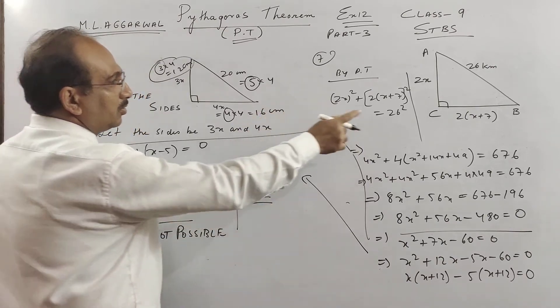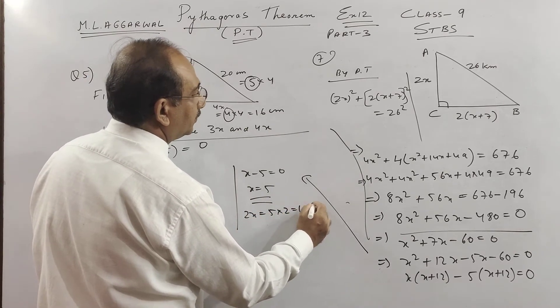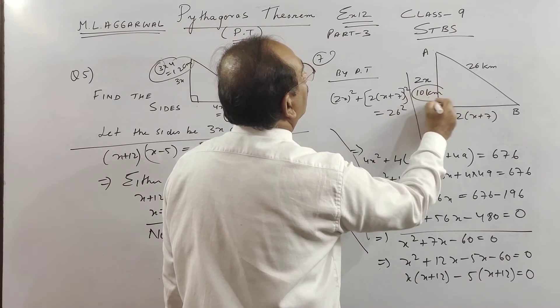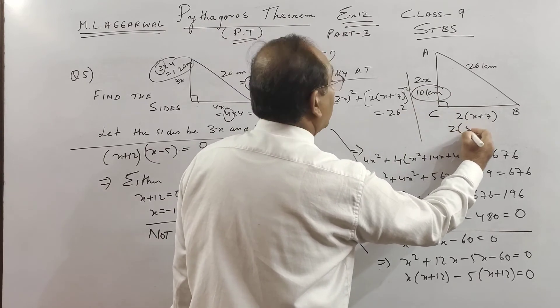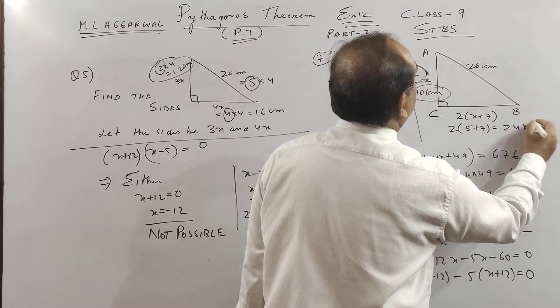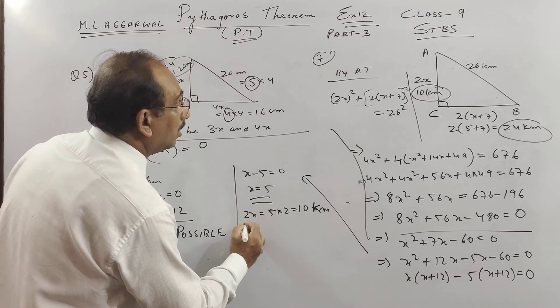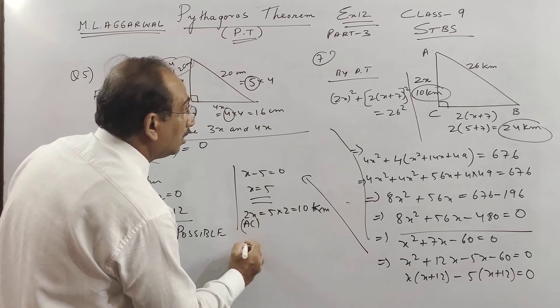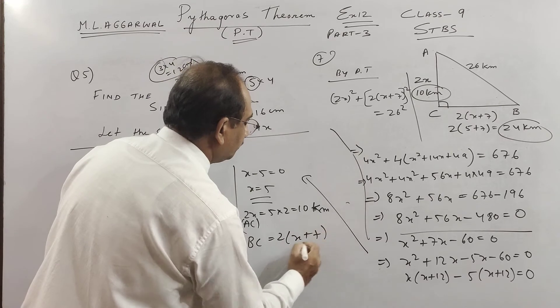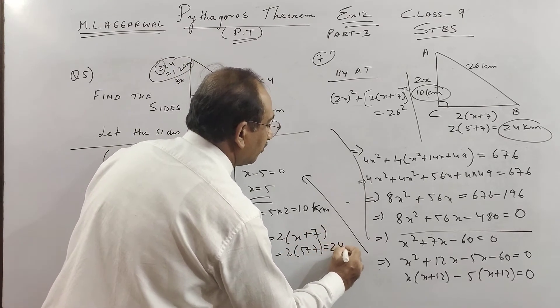Minus value is not possible but here we have children x minus 5 is 0, x is 5. Now with this we will apply, so one side is 2x, so 2x is 2 into 5 is equal to 10. So this is 10 kilometer. This is 10 kilometer and this is 2x is 5, so this is 2x plus 7, 24 kilometer.